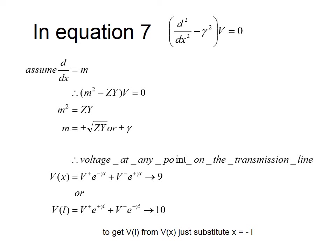The voltage transmitted from the source travels along the transmission line and gets absorbed by the load. If not fully absorbed, part of it reflects back to the source. V⁺ denotes the forward traveling wave moving from source to load, and V⁻ denotes the reflected wave traveling back from the load. The voltage decays along the transmission line, so V(x) = V⁺·e^(−γx) + V⁻·e^(+γx), which is equation 9 giving voltage at any point measured from the source toward the load.